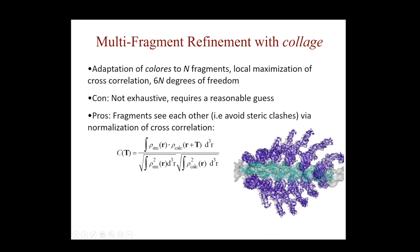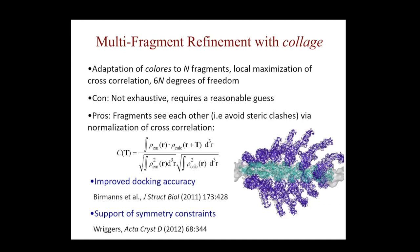An application example is this myosin-decorated actin filament from muscle fiber, where individual actin subunits and myosin S1 motor domains were all fitted with multi-fragment refinement, getting very good results. One of the advantages of multi-fragment refinement is that we can impose symmetry during the optimization — putting symmetry constraints into the refinement. As I mentioned, since the fragments see each other, docking accuracy is improved typically versus using Colores individually.